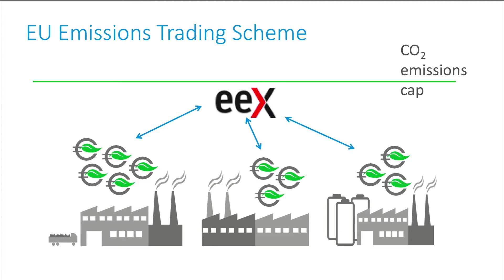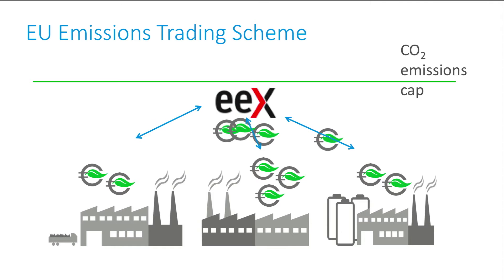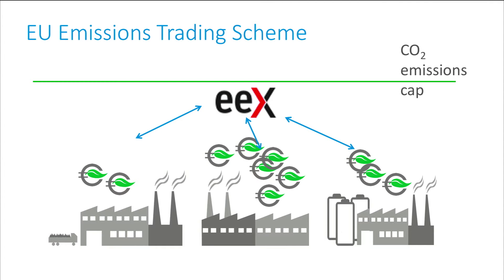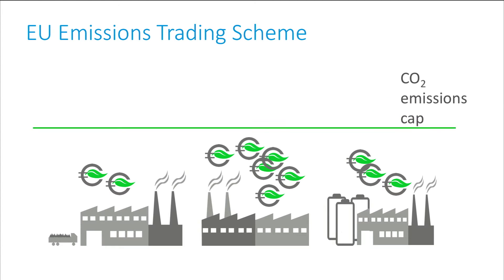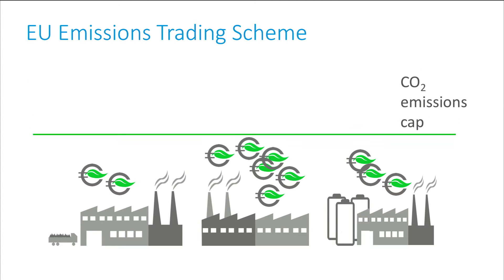This makes the permit price fluctuating — being higher when demand for permits is high relative to supply, and lower when demand is low. The level of the emission cap is a policy choice. The EU Emission Trading Scheme, for instance, reduces the volume of permits by 1.7% every year.